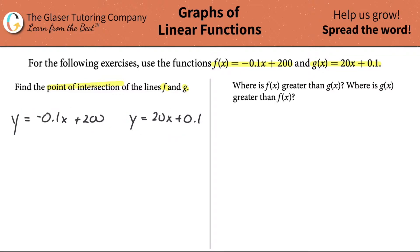So now that I have these two equations, and they're telling me to find the point of intersection—we've done this before, by the way, check out the playlist on our channel. What I can now do is essentially I'm going to set these two equal to one another. Since I know this y is equal to this y, then that means this part of the equation must also equal this part of that equation. So I'm going to write negative 0.1x plus 200 must equal 20x plus 0.1.